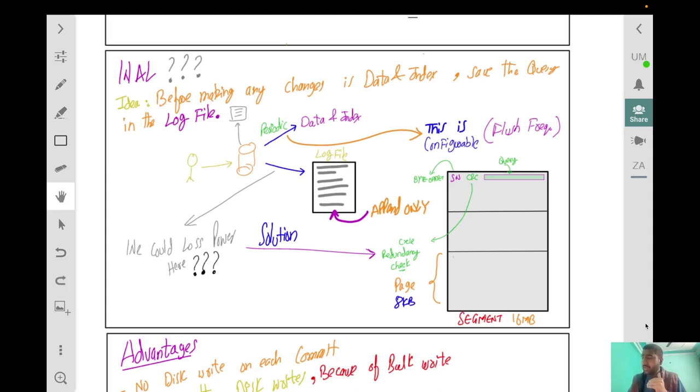The question can arise: what guarantee is there that when storing in the log no failure happens? Let's say we stored half the query and power loss happened. The question is how do databases handle power loss? To understand that, let's go into a little bit more depth on how log files actually store the data.